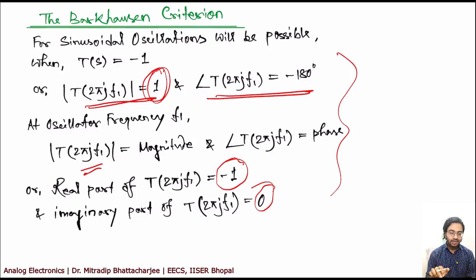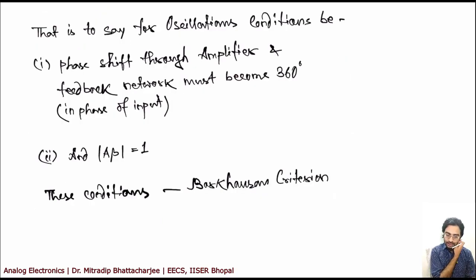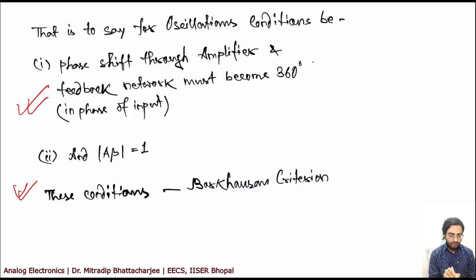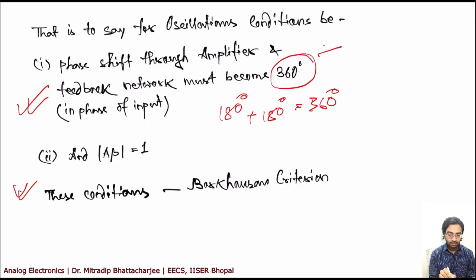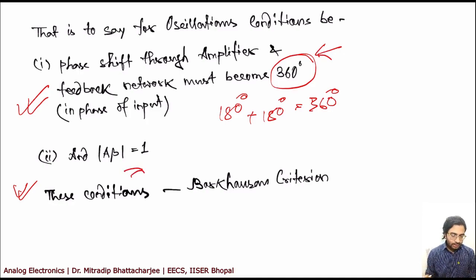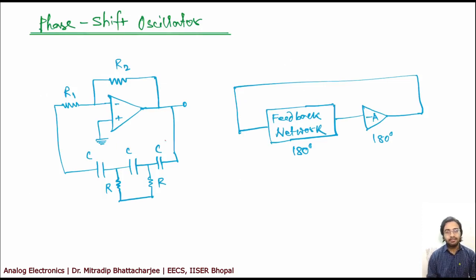This is known as Barkhausen's criteria. The phase shift through the amplifier and feedback network must become 360 degrees — the amplifier gives 180 degrees and the feedback side gives another 180 degrees — and the magnitude should be 1.